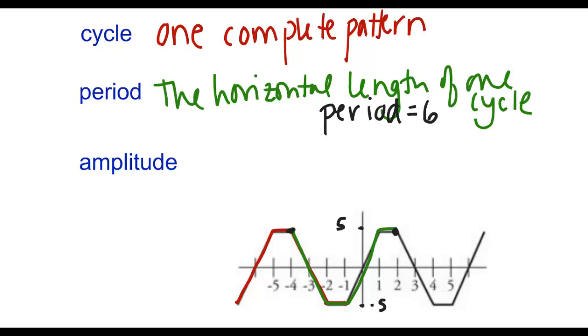No matter how you view the cycle, whether it was that first red way or the green way, you still should always get the same value for the period. It should always be 6 units long, regardless of where you start and end. Because as long as you're starting and ending in a correct spot, it should be 6 units long.